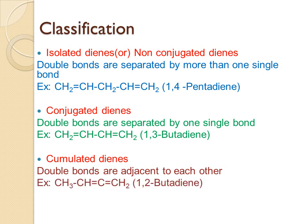Next are cumulated dienes. If the double bonds are adjacent to each other with no separation by a single bond, they are called cumulated dienes. For example, 1,2-butadiene has 4 carbon atoms and the double bond is at carbon 1 and carbon 2 with no single bond separating the two double bonds. The carbon with the double bond is given the least number, so it is 1,2-butadiene.